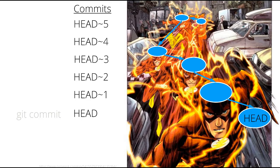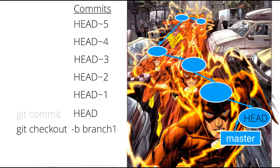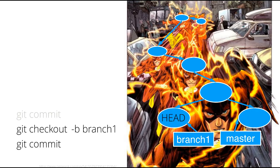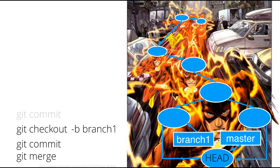Getting back to my analogy, new commits are added where Flash is looking. Master is the default branch, but we can alternatively issue a checkout command to define a new branch called branch1 as the current branch. Then new commits will be added to that branch. This is how separate parallel universes can exist at the same time. The git merge command combines changes made back into a new commit under the long-running master branch, and branch1 can be removed.